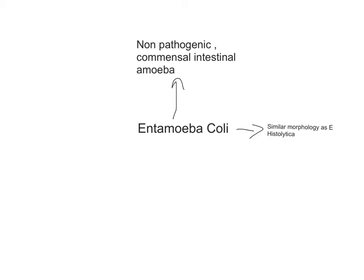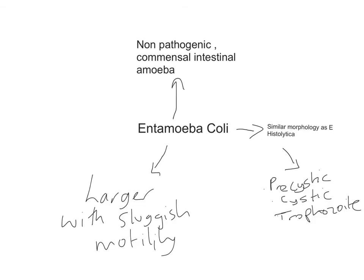Entamoeba coli has a very similar morphology to Entamoeba histolytica, except that the trophozoite stage is not invasive in any way. The trophozoite form only stays in the large intestine of the host and only feeds on bacteria and fecal debris in the large intestine. Entamoeba coli is larger in size with sluggish motility.